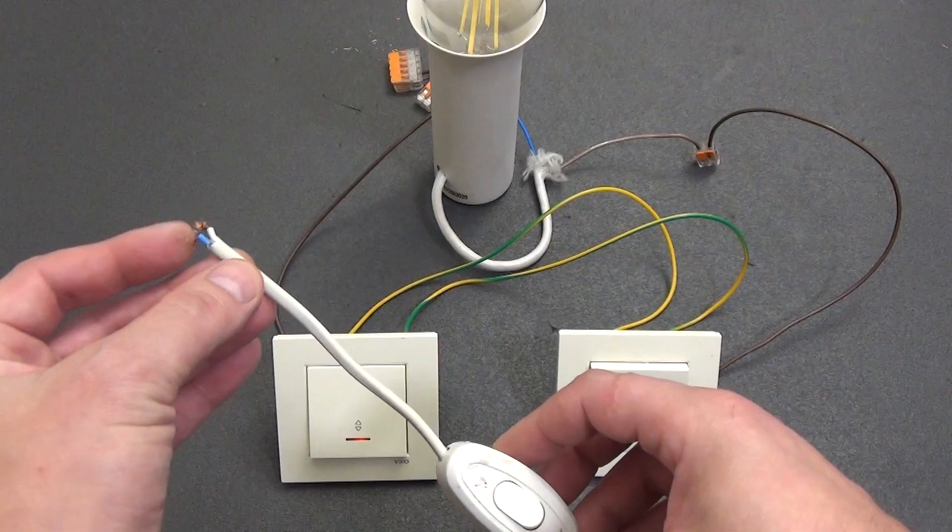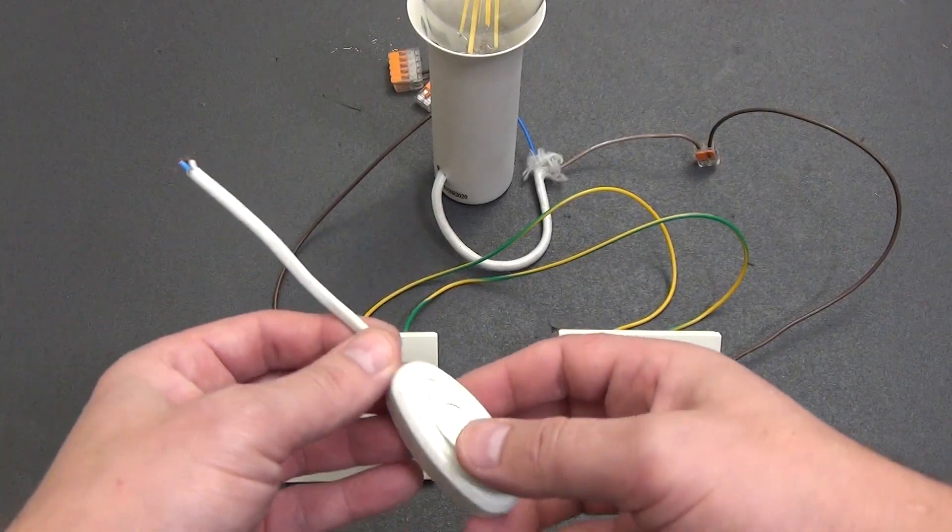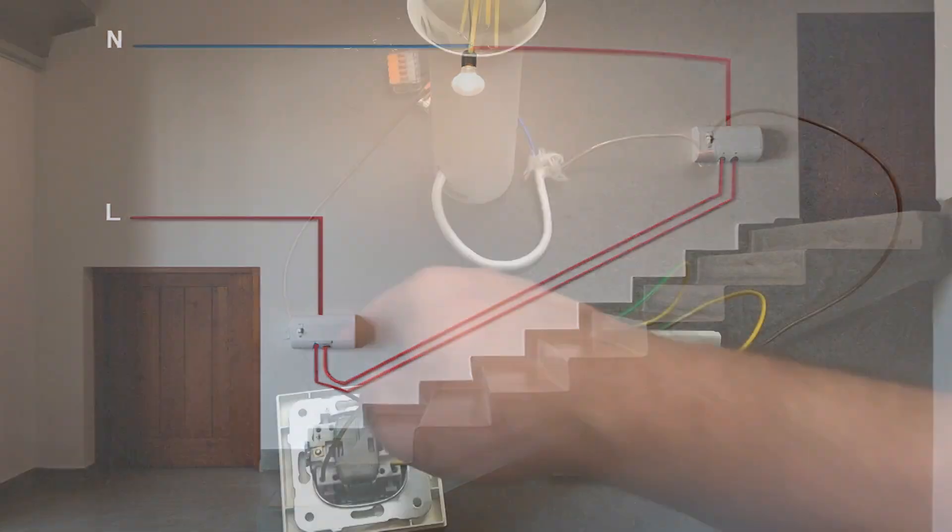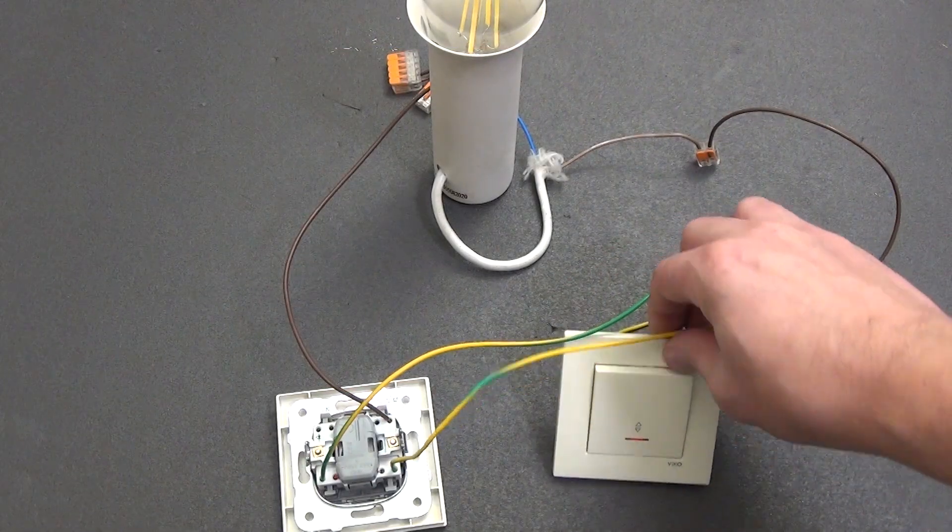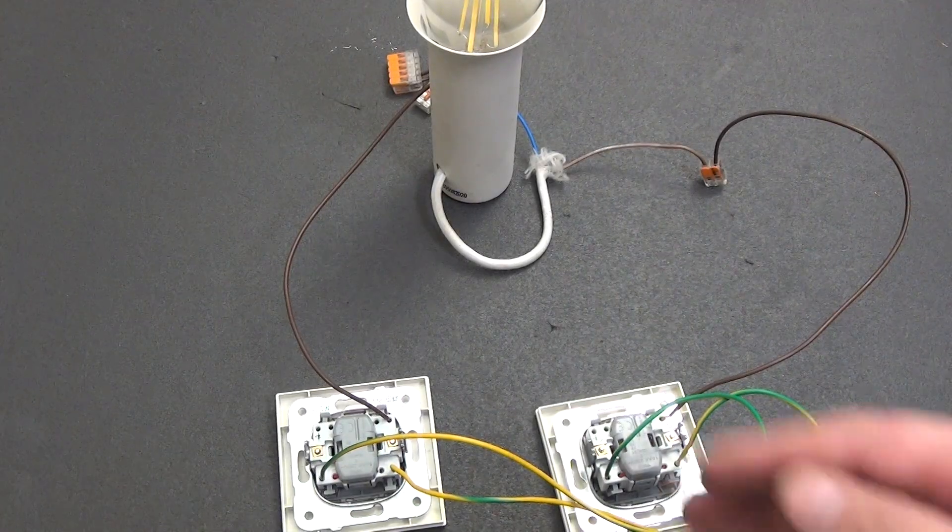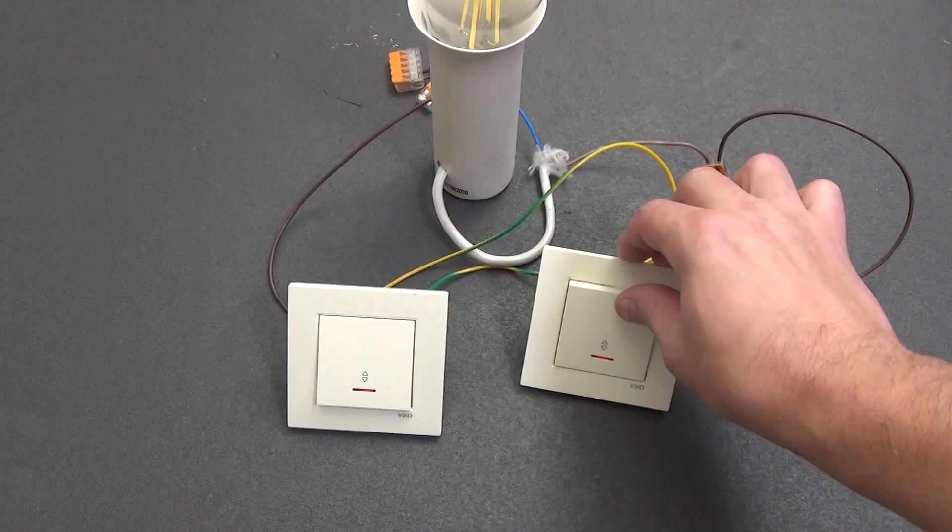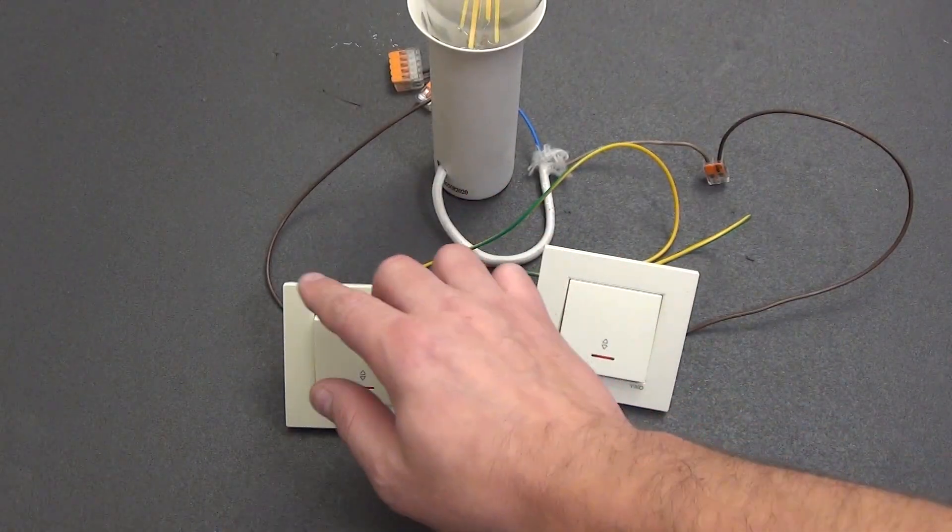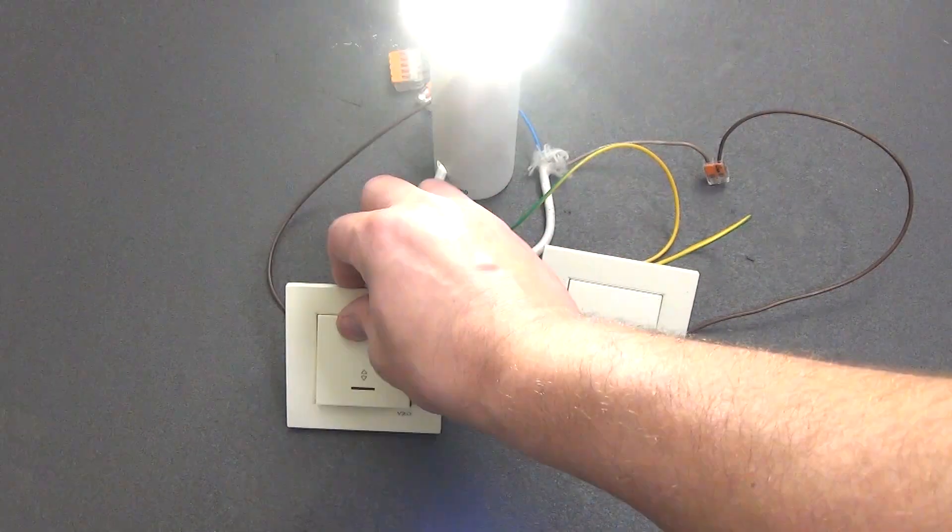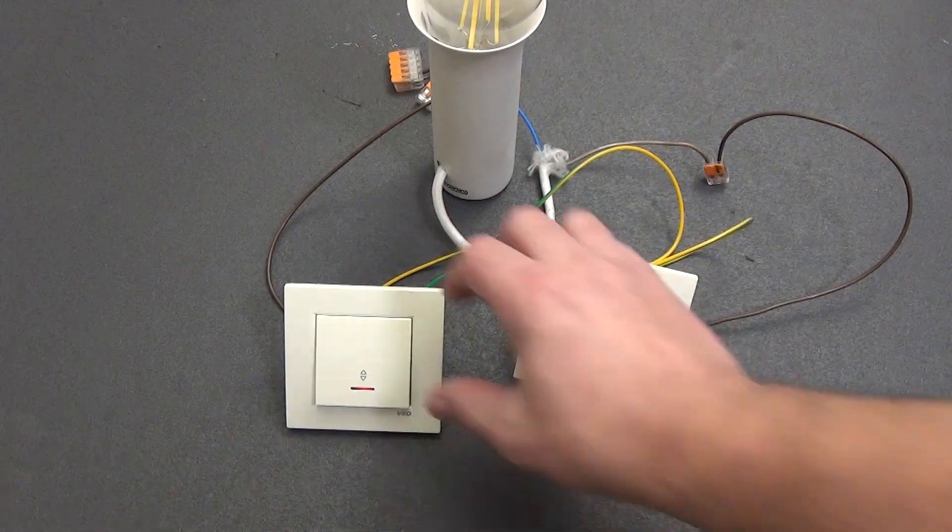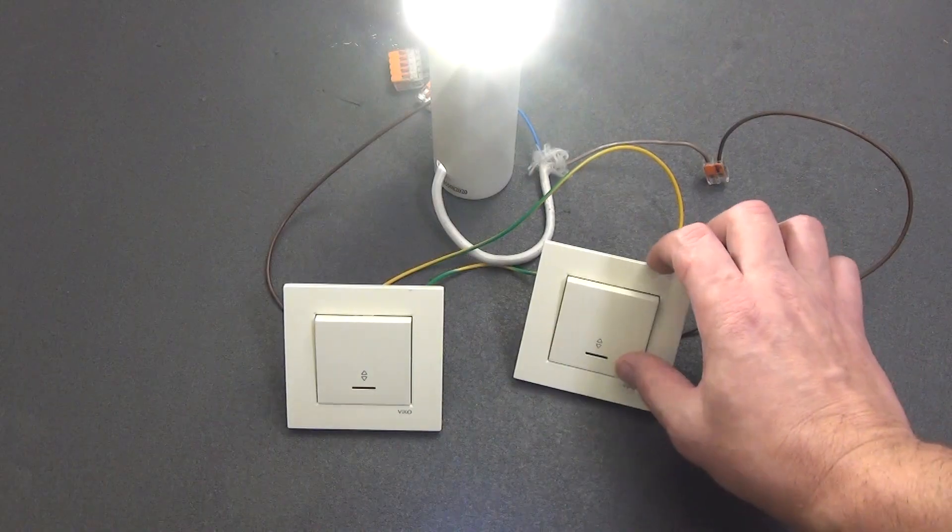The difference from a regular switch is simple. If a standard one has only two contacts, on and off, then a pass-through has three. One common, and the other two are connected between the switches and are called changeover contacts or travelers. When you click either of the switches, it switches the current from one traveler to the other, and as a result the lamp either lights up or goes out. That is, there is no concept here of where it is on and where it is off; everything depends on the position of the pair of switches.